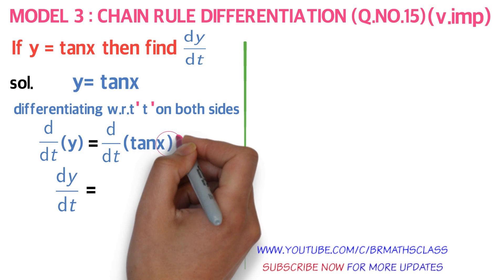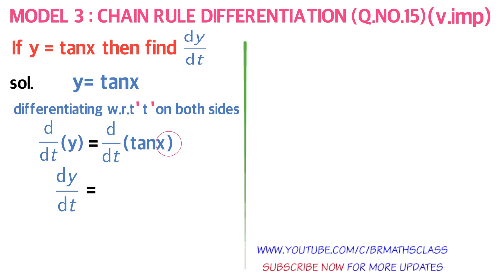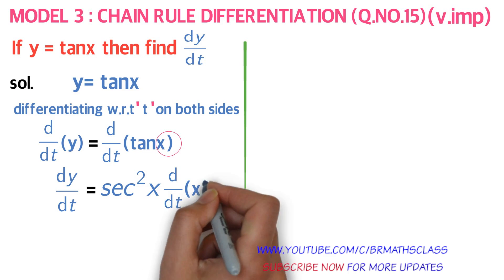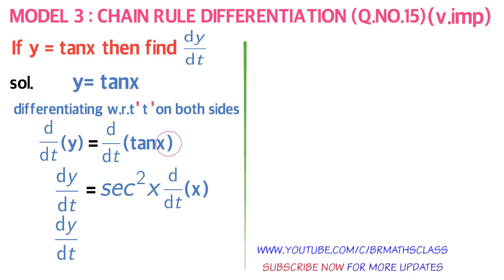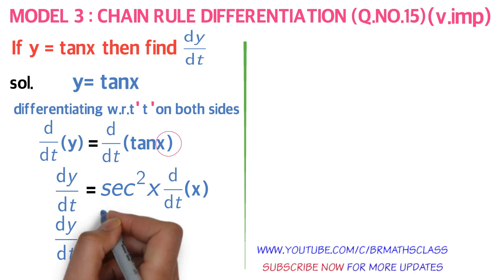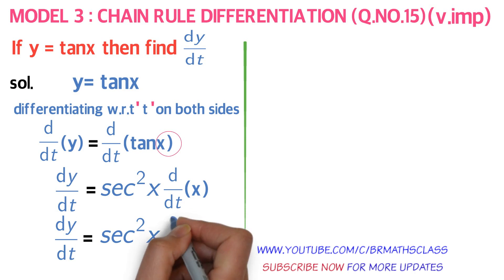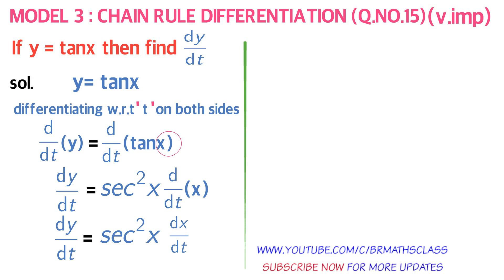Imagine x as t — then d/dt of tan t is sec²t. Substituting back, it is sec²x. From the chain rule, we also differentiate what we imagined as t, giving d/dt of x, which is dx/dt. Therefore, if y = tan x, then dy/dt = sec²x · dx/dt.